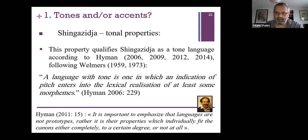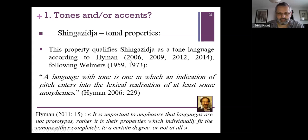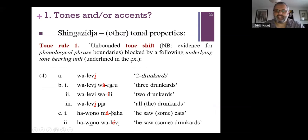The fact that you have this tonal opposition for some morphemes qualifies Shingazija as a tone language according to Hyman, who says 'a language with tone is one in which an indication of pitch enters into the lexical realization of at least some morphemes.' There are other properties also associating Shingazija with tone languages.